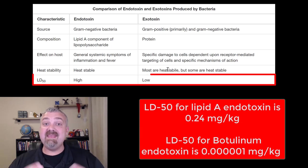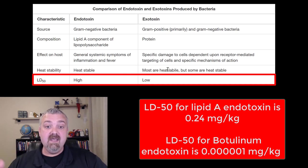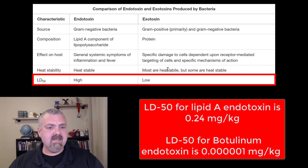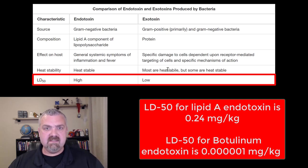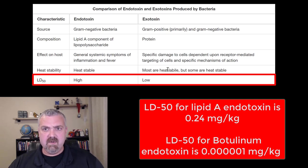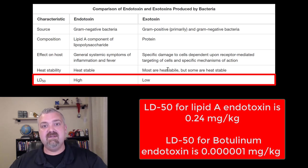Next, the LD50 — the lethal dose of a toxin for 50% of the population. The LD50 for endotoxins is very high, whereas it's very low for most exotoxins. The LD50 for the Lipid A endotoxin is 0.24 milligrams per kilogram. Compare that to the most potent exotoxin: the botulinum toxin, which causes botulism, has an LD50 of 0.00001 milligrams per kilogram — making it 240,000 times more lethal than the bacterial endotoxin.